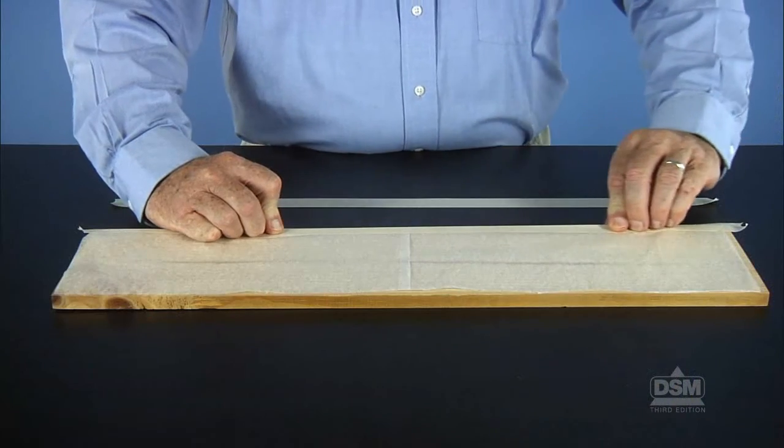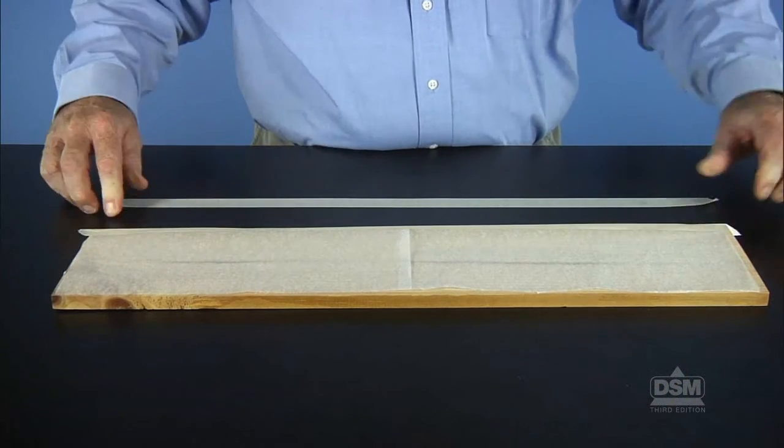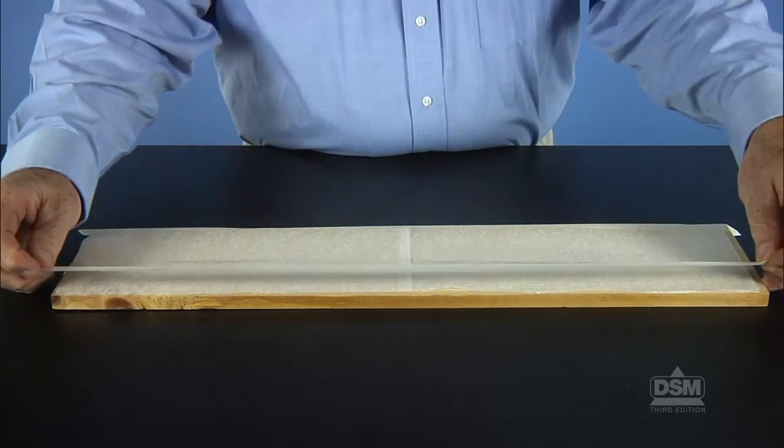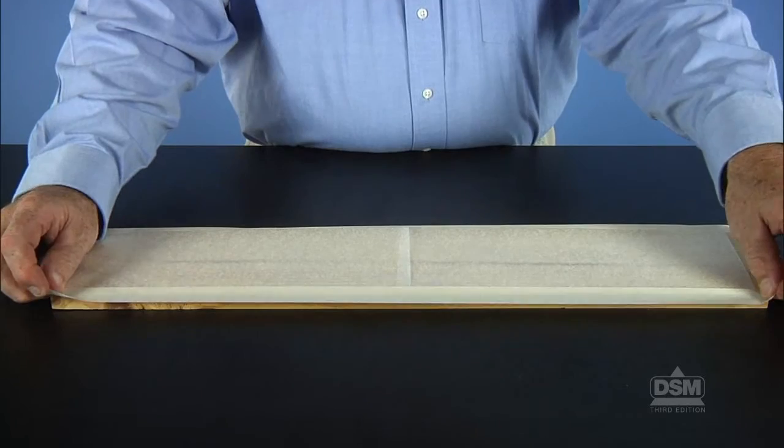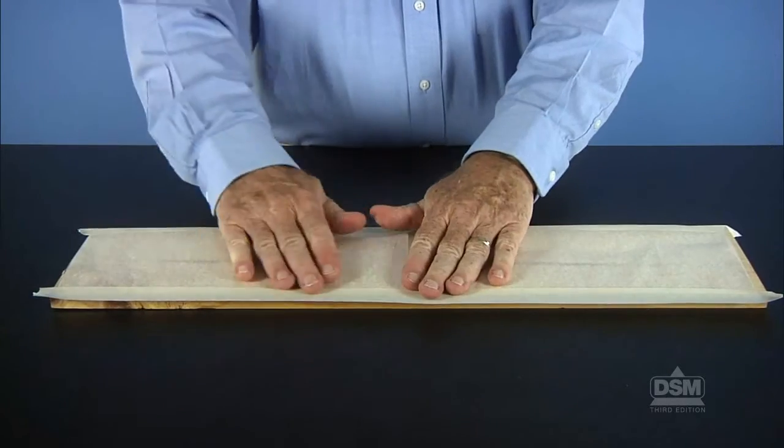Explain that what we call a ramp is really a simple machine called an inclined plane, or a flat slanted surface. Next, distribute a wooden board to each team and tell students that they will use the wooden board to make a ramp or inclined plane. Have students tape the pieces of wax paper end to end along the board. This wax paper will reduce the friction between the brick and the board.